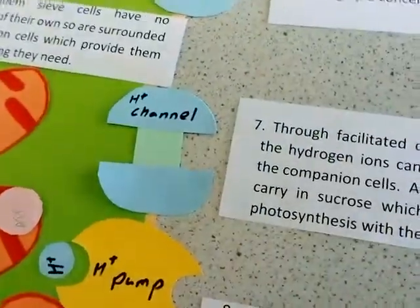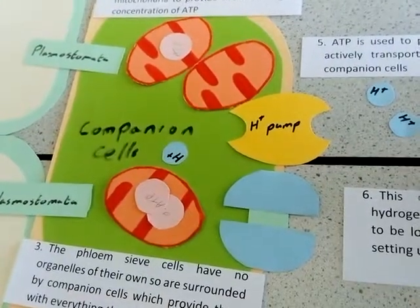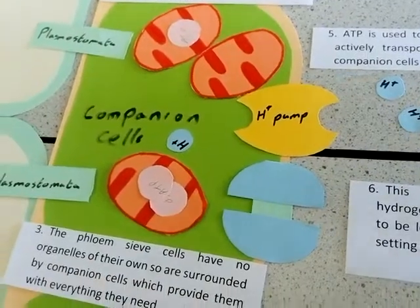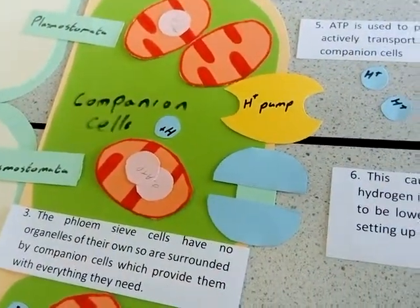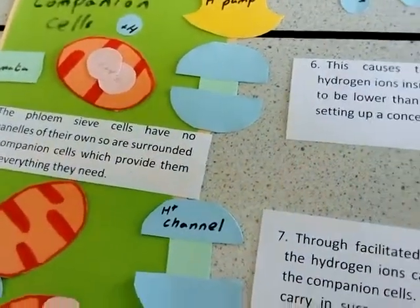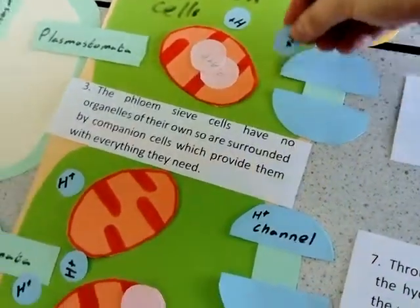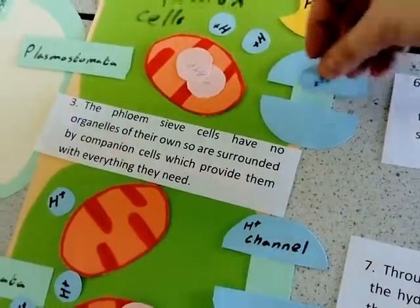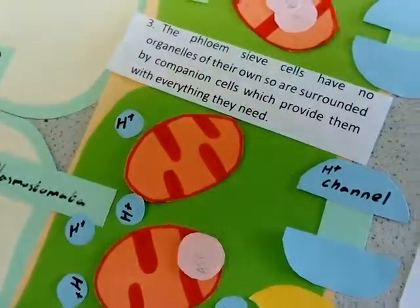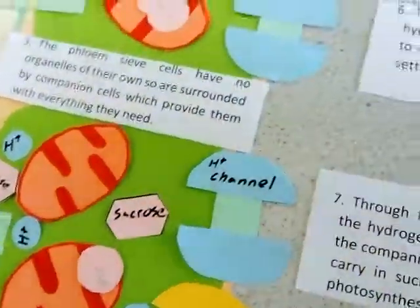This causes a concentration gradient. The concentration gradient of the hydrogen will be higher than the concentration inside. This causes the hydrogen ions to move back into the companion cells through a channel protein. As it moves back through this channel protein, it carries the sucrose into the companion cells from the surrounding areas.